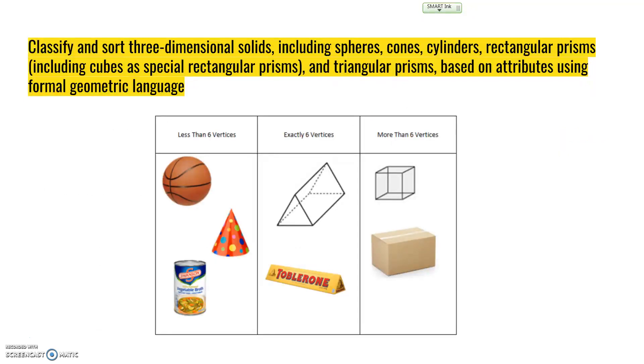If they are sorting them, it might be in a chart like this, where they put shapes with less than six vertices in one column, exactly six vertices in another, and more than six vertices in the last one. For example, a sphere has just one large curved surface. It has no vertices, no edges, and no faces.